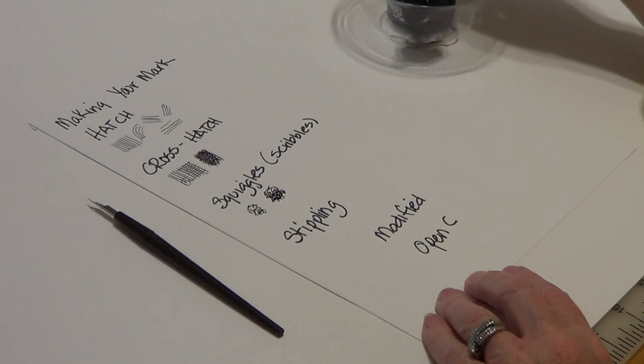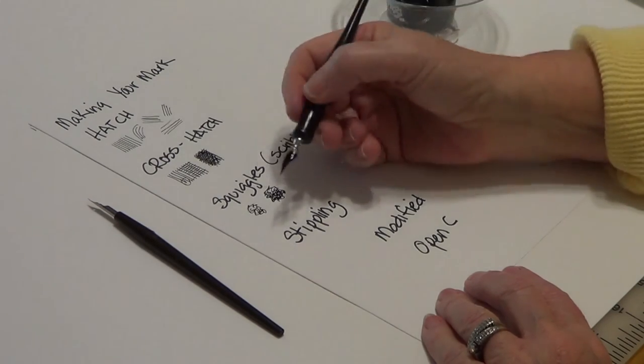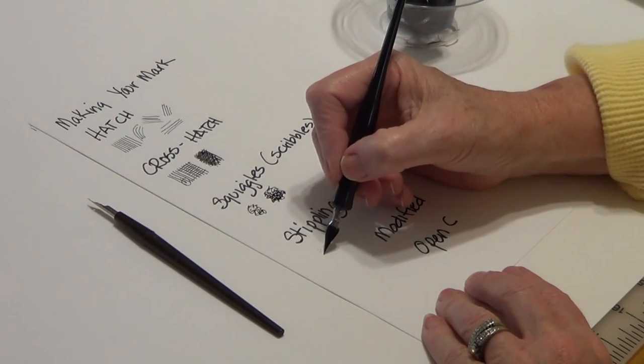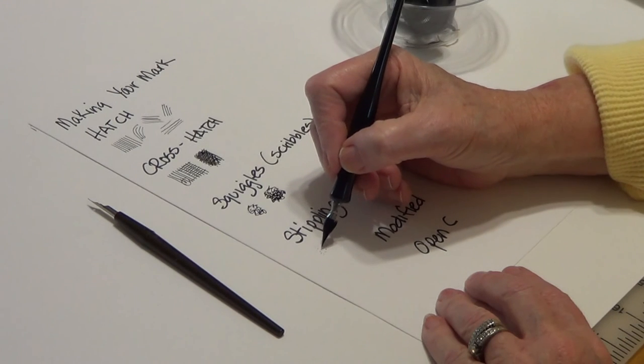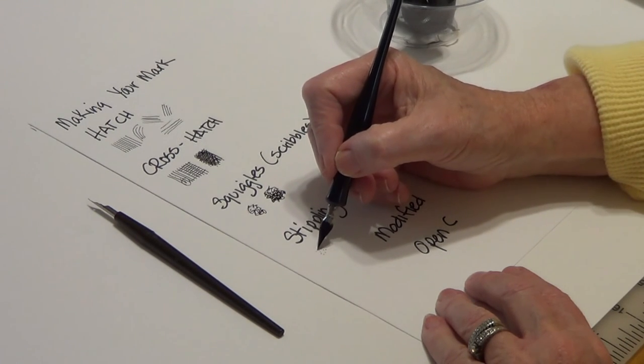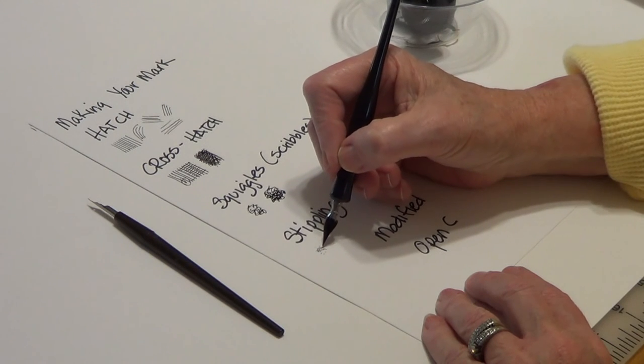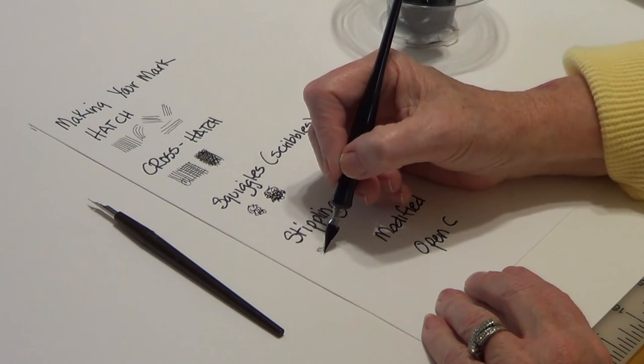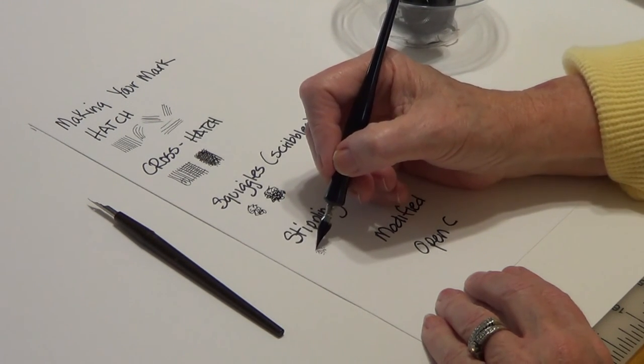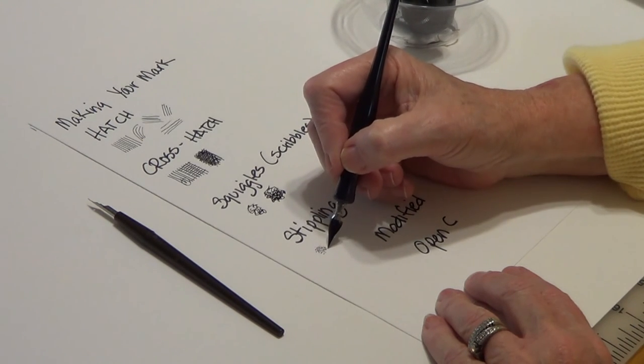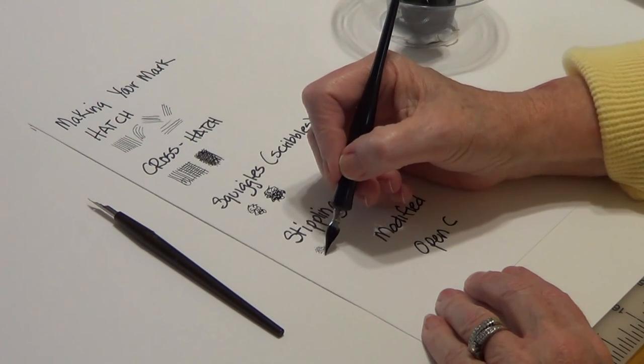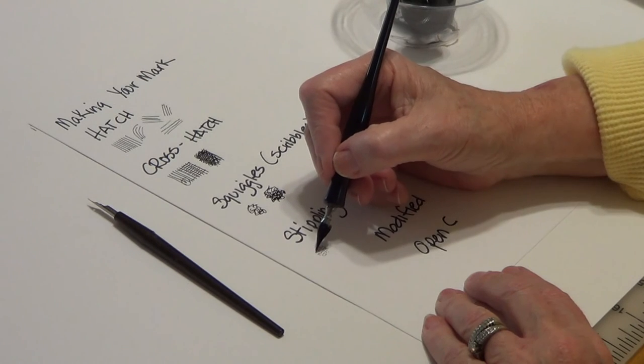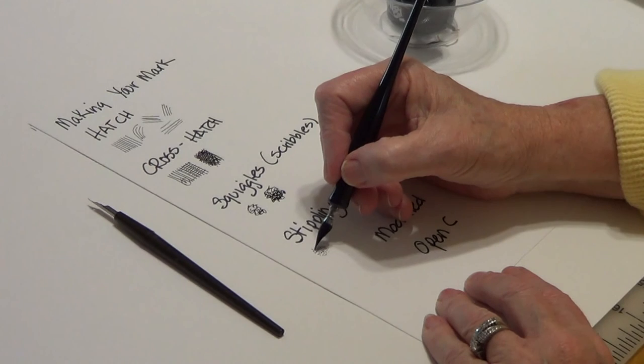The other one that we're going to use is the stippling. Stippling is just dots. And if it's in color, then it's called pointillism. If it's in black and white, as we're doing it, or in graphite, it's called stippling. And the closer each dot is, then the darker the value and you can really get carried away with this.